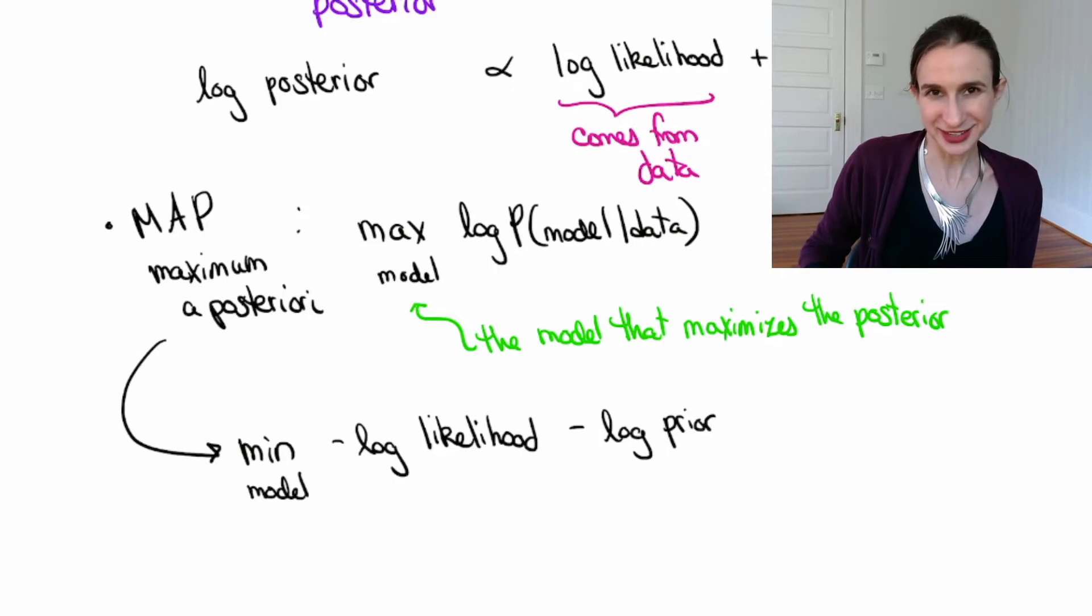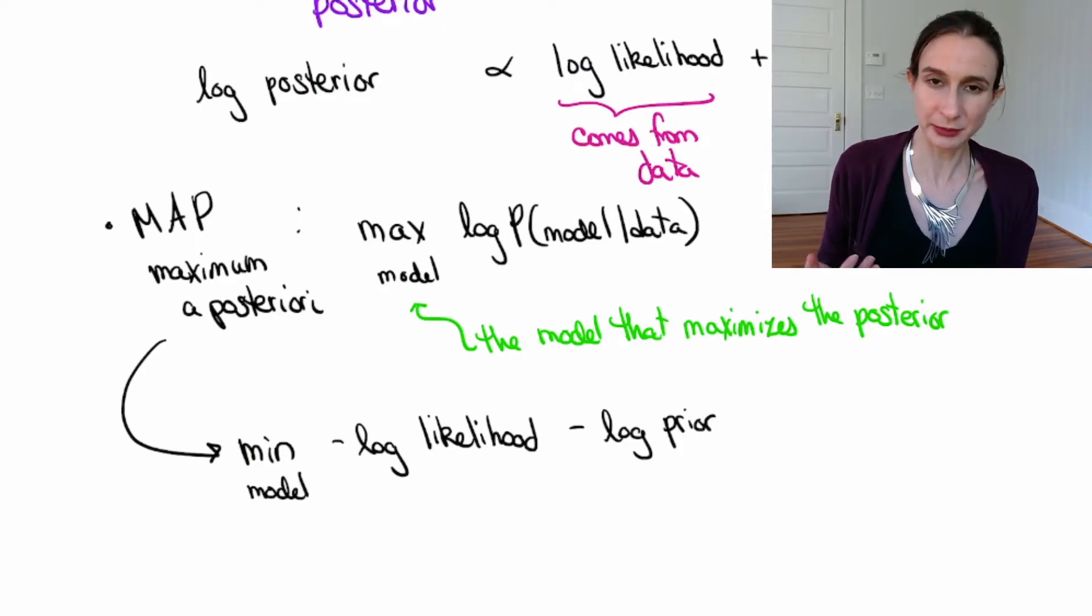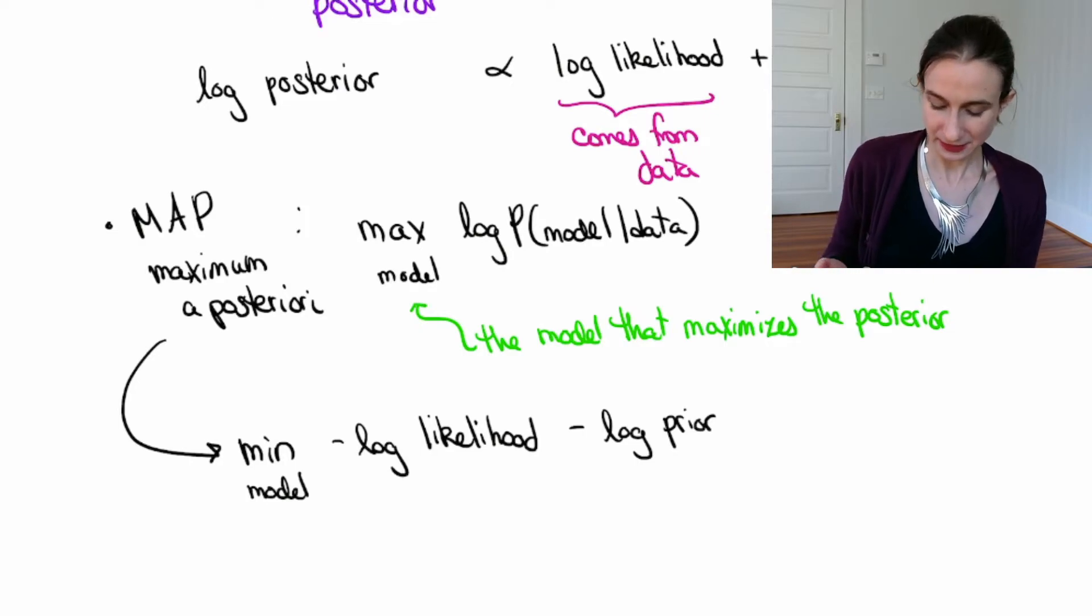Okay, we have specialized names for these two terms in supervised learning. Namely, the first one, which is the negative log likelihood, is actually called the loss function. And the negative log prior, that's the regularization. Regularization is the same thing as prior knowledge, because you put regularization on the model before you ever see the data. So the log prior term, that's actually the regularization term, and then the log likelihood, that's actually the loss function.